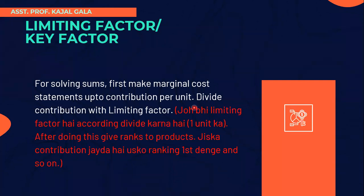To repeat: you will have to prepare a marginal cost sheet, but this marginal cost sheet will be prepared only up to the contribution per unit. The question will tell you which is the limiting factor. Depending on that, divide the contribution by the limiting factor. The highest contribution per unit of limiting factor gets the first rank.